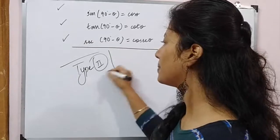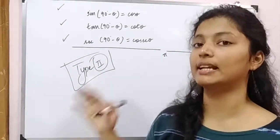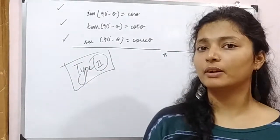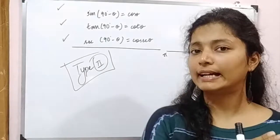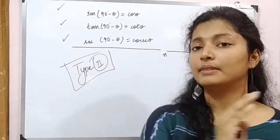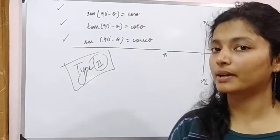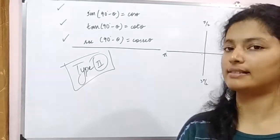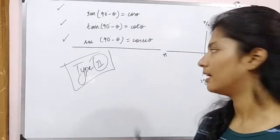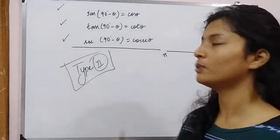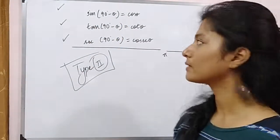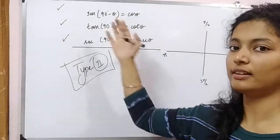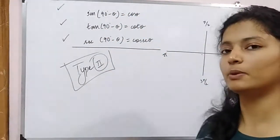In the last video we did Type 1 trigonometric questions — one type which you can understand. Now we will do Type 2. First, let's see how the formula came about, then we will move to Type 2 questions.